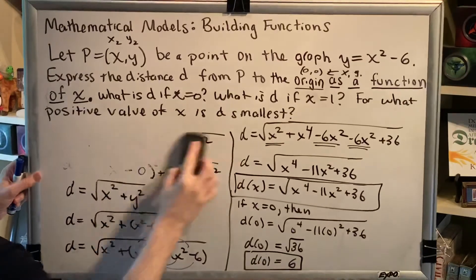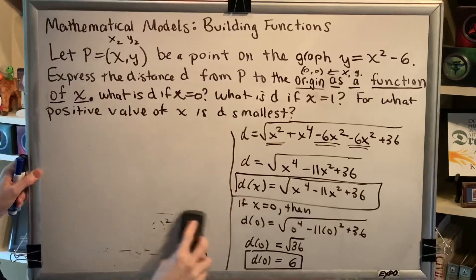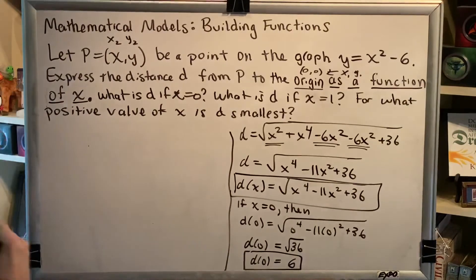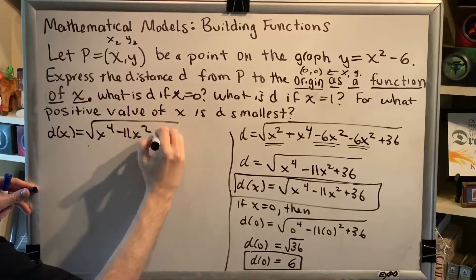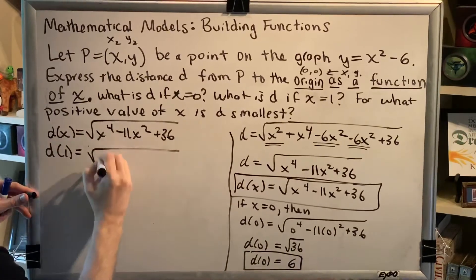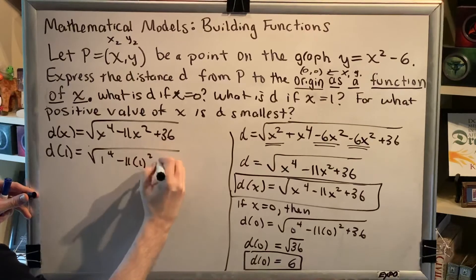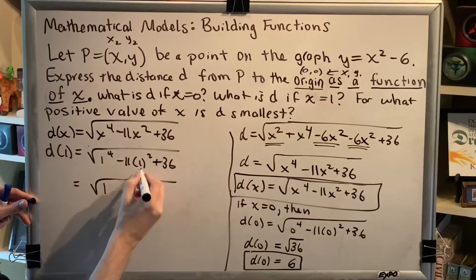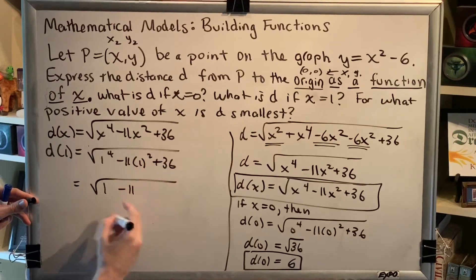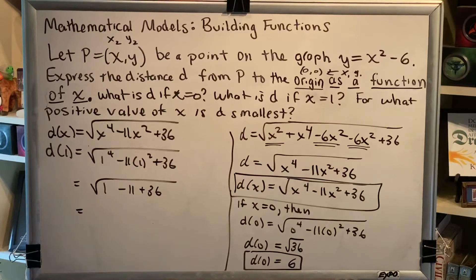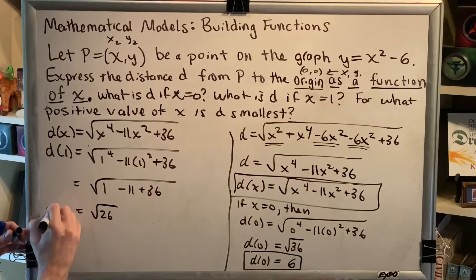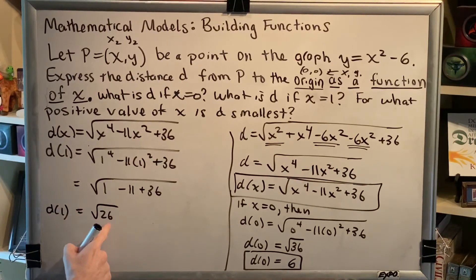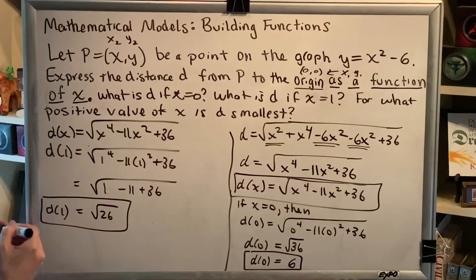Next part. Okay, what is d if x=1? Well, we know d(x)=√(x⁴-11x²+36). So d(1) would be √(1⁴-11(1)²+36). 1 to the fourth is 1. 1 squared is 1 times 11 is 11. It's being subtracted. All right, so let's see, 1-11 is -10, plus 36 is 26. So we get √26. This cannot be simplified. The only factors that make 26 are 2 and 13. Those are both prime. There's no pairs. So this is the exact final correct answer.